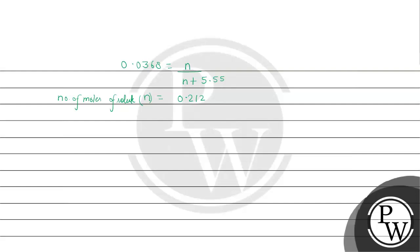Now, molality will be number of moles divided by weight of solvent in kg. So it will be 0.212 divided by weight of solvent which is 100 grams. If we convert it to kg, we multiply by 1000, and it will come as 2.12 molal.